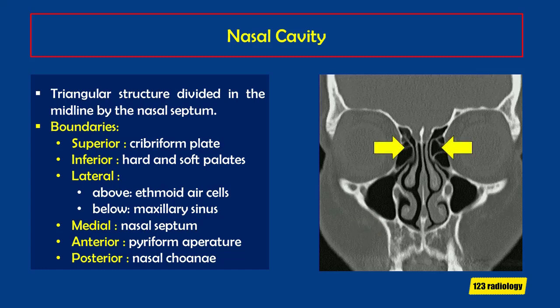Laterally, the nasal cavity is bounded by the ethmoid air cells above and maxillary sinuses below. And medially, it is divided by the nasal septum.